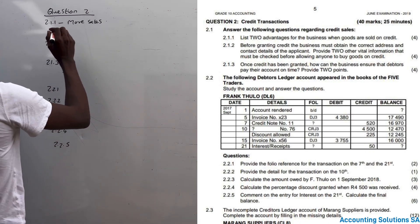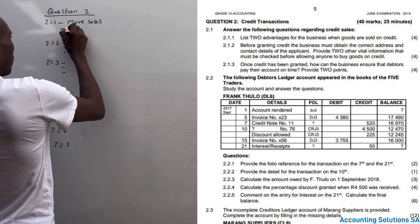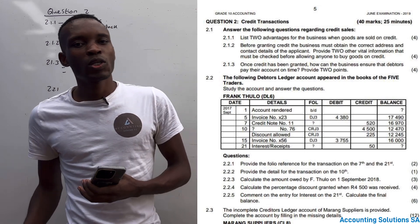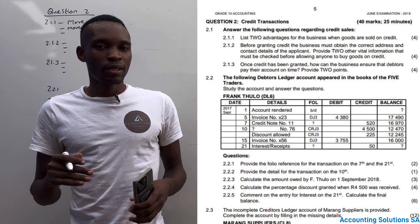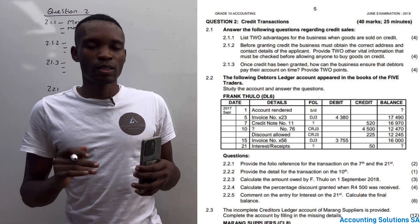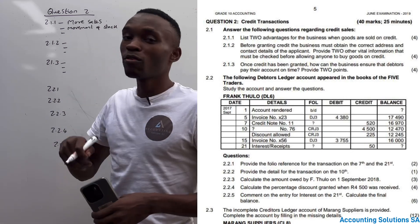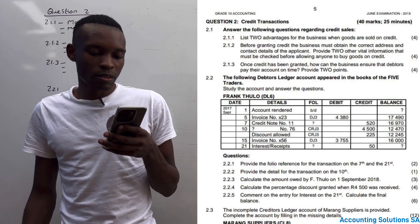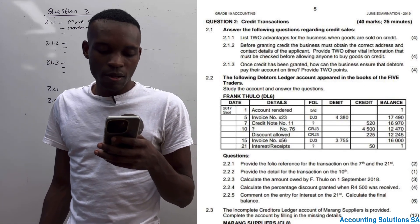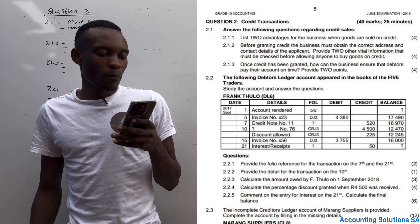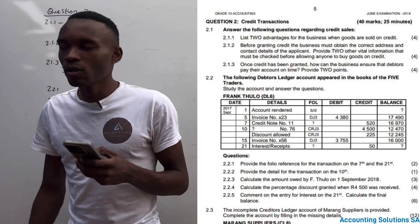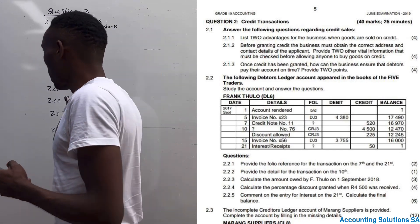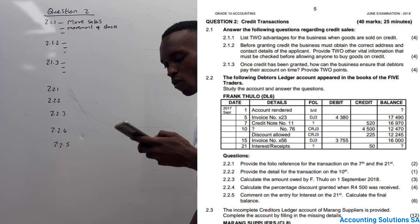Number two, you can say there is movement of stock. For example, if you are selling a product like bread, if you don't sell it, it's going to expire. Same with eggs — if you give people goods on credit, at least there will be movement of stock. Another option: it allows the business to charge more for this service, and more customers can purchase anytime during the month.